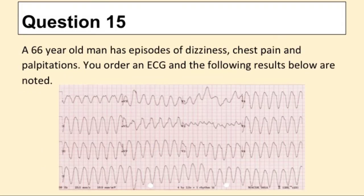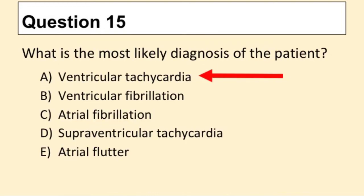Question 15. A 66-year-old man has episodes of dizziness, chest pain, and palpitations. You order an ECG and the following results are noted. What is the most likely diagnosis of the patient? The answer is A: ventricular tachycardia.